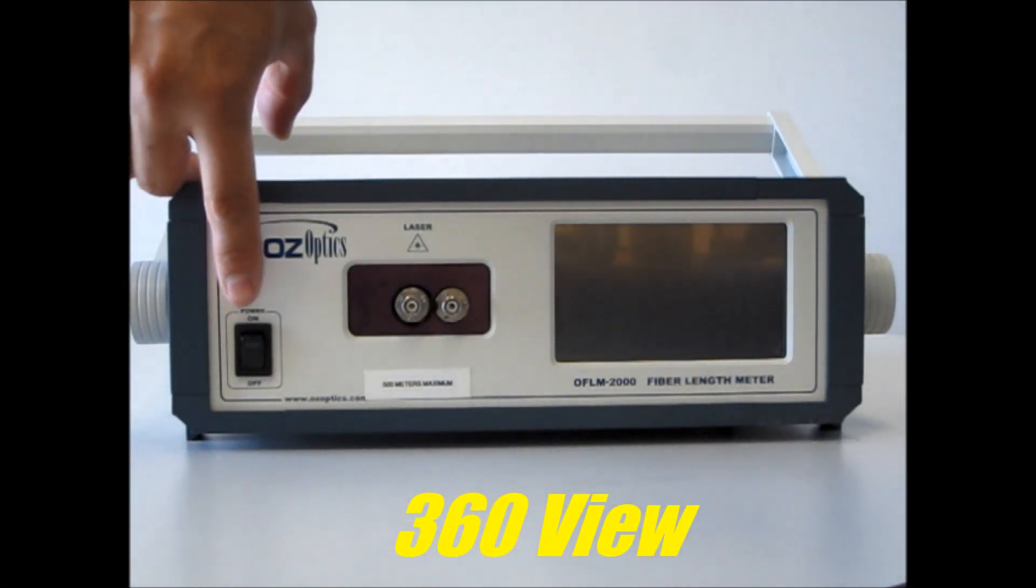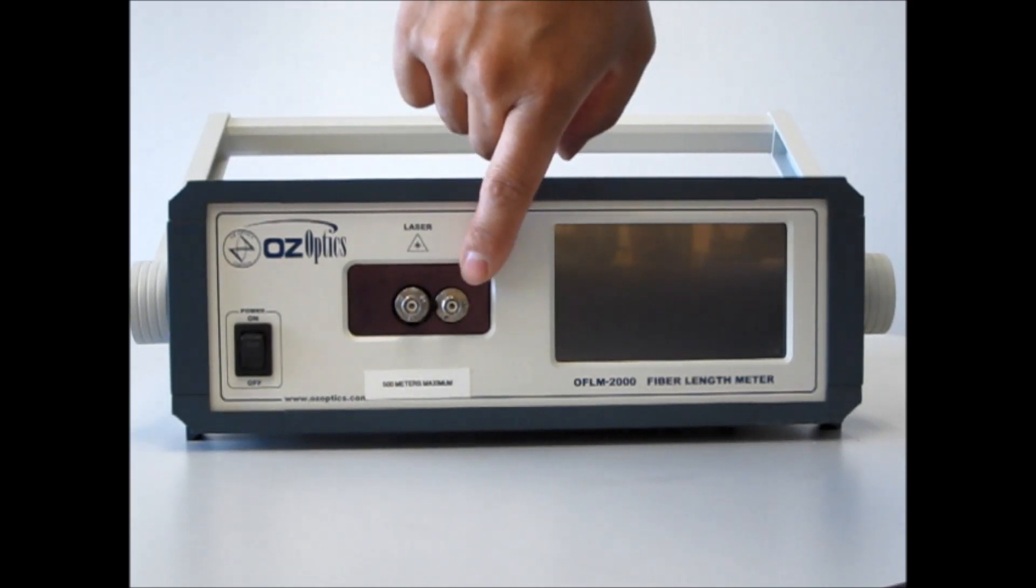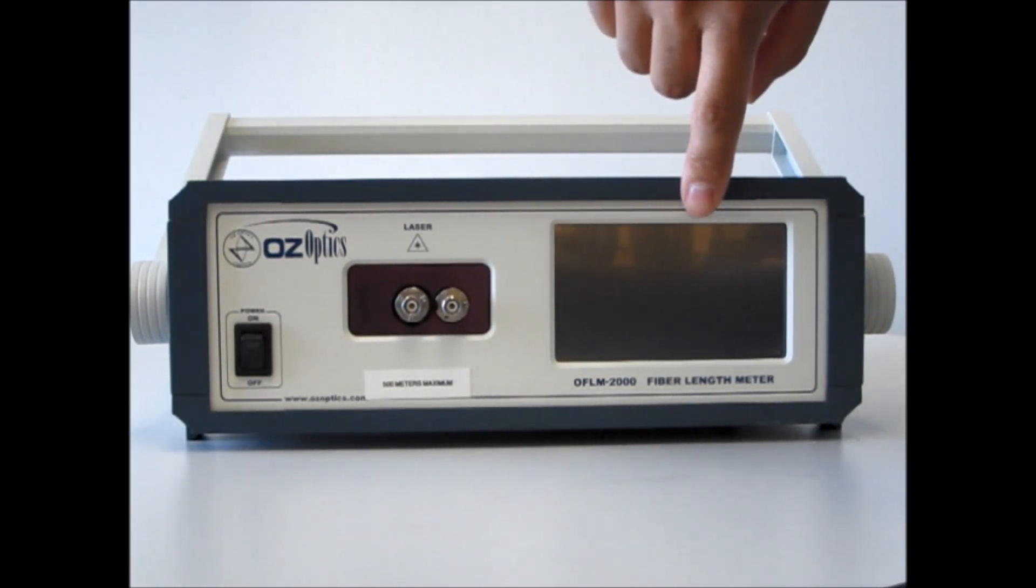We begin at the front panel of this two-port unit. Here we have the power switch, the send and receive ports, and the touch screen display.